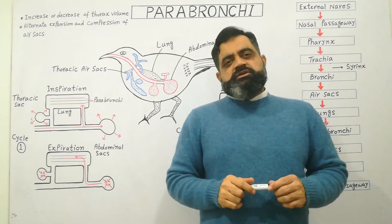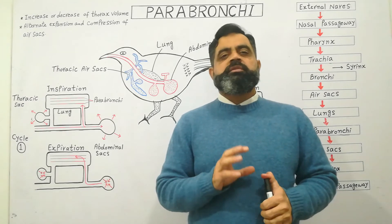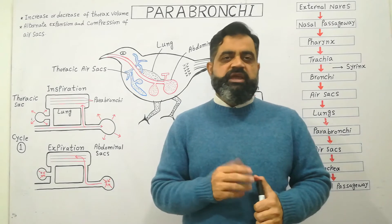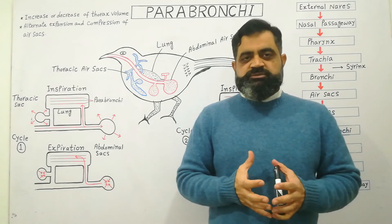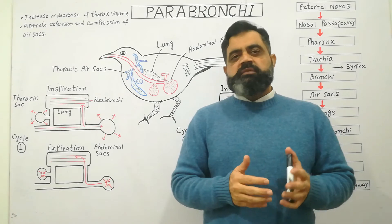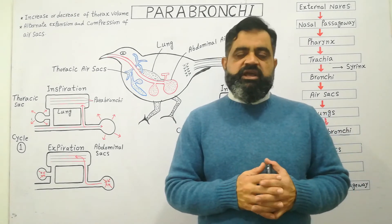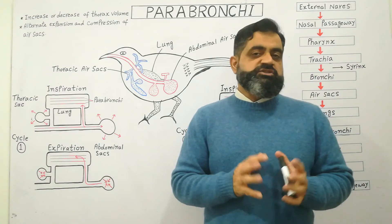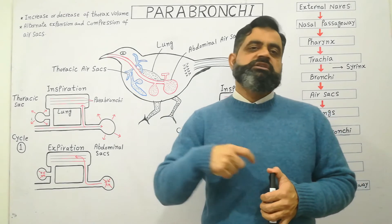The mechanism of respiration in birds is totally different from that in amphibians, reptiles, and mammals. In mammals, for example, lungs are spongy — they expand and compress, they can be inflated and deflated with air. But the lungs of birds are not spongy, and they have a constant flow of air from one side of the lungs to the other side.